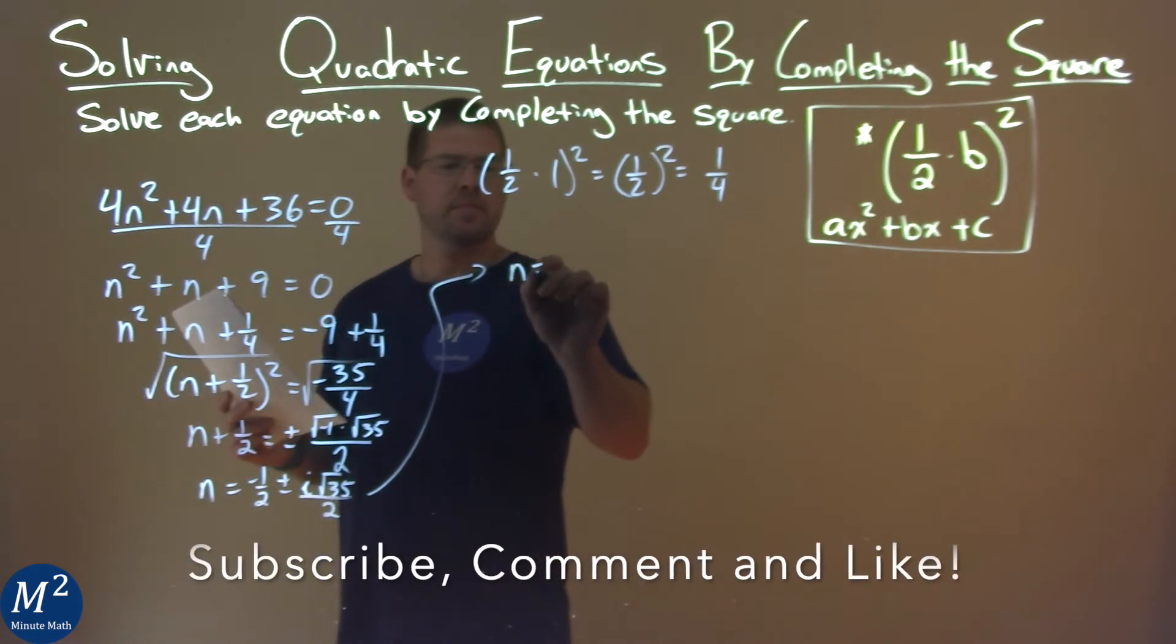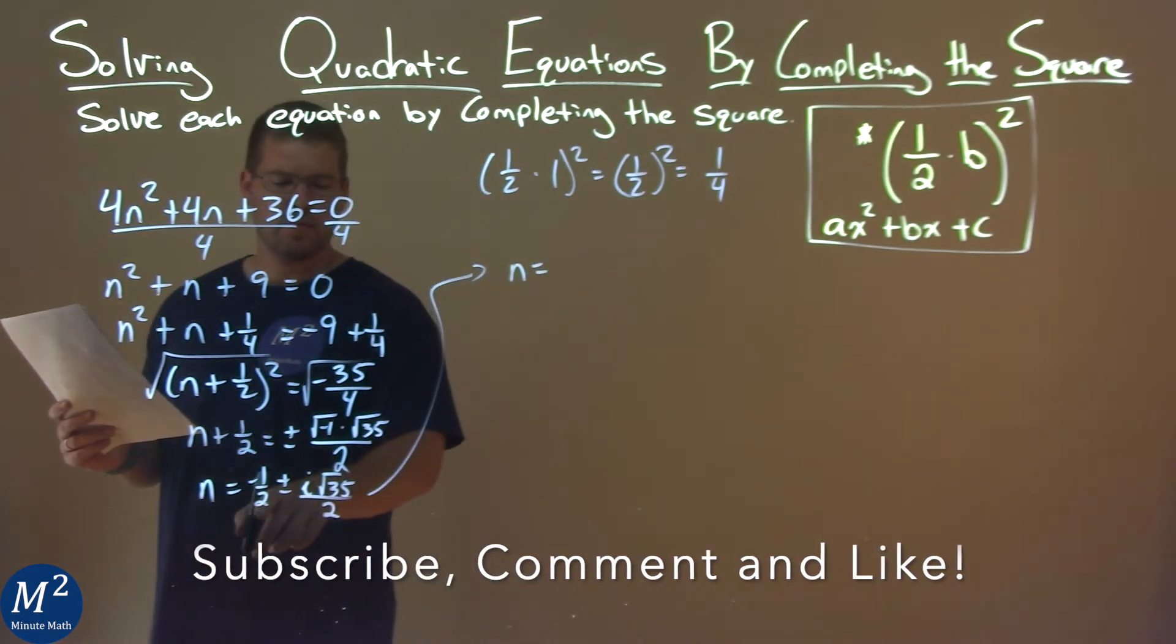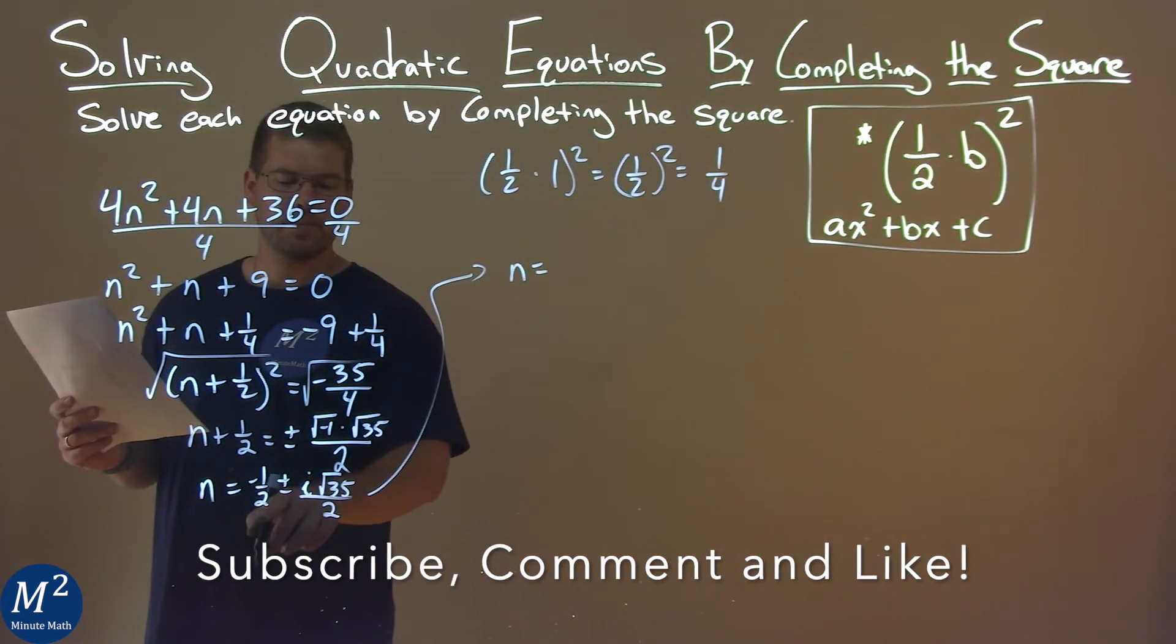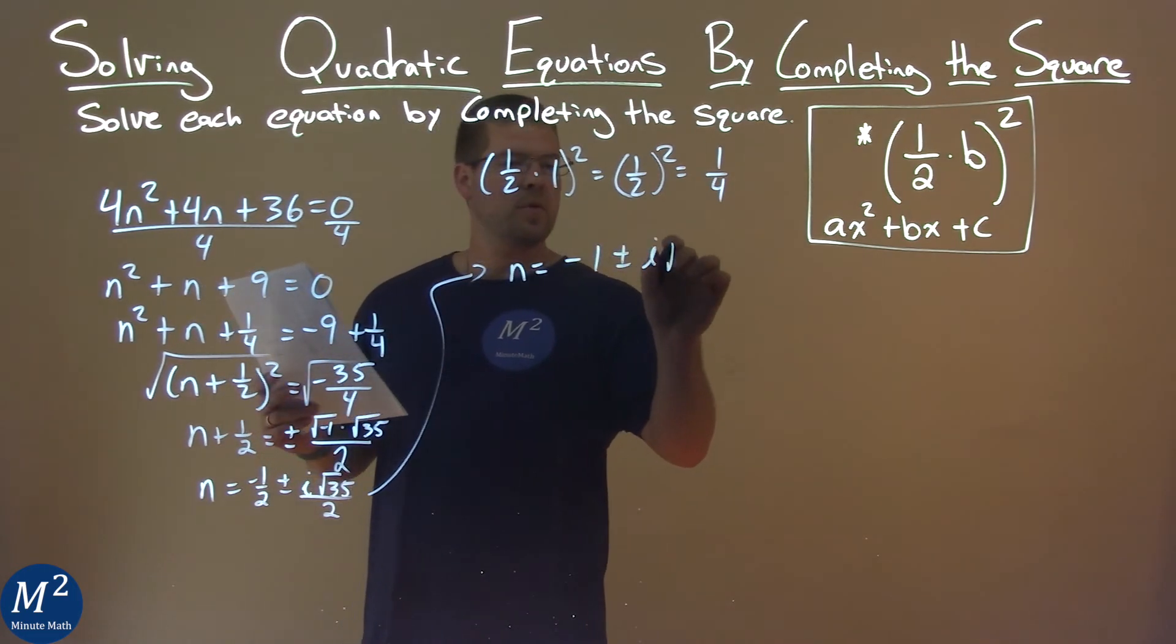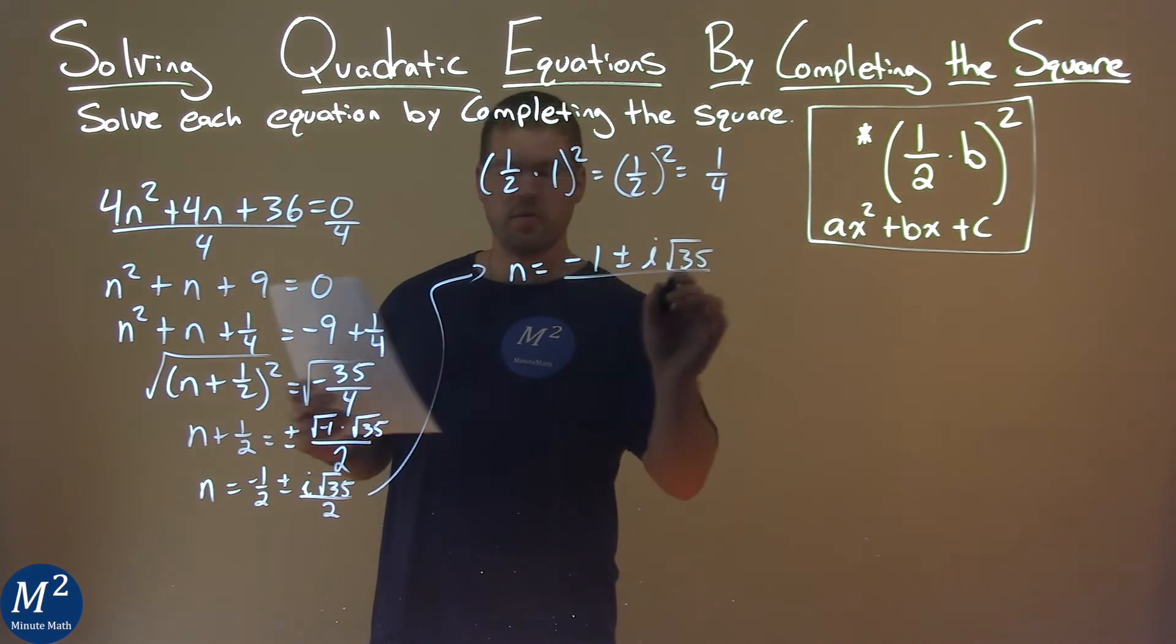Let's keep going here. And n equals, and notice we have the same denominator, common base of 2, so we can add them together. So we can write it as negative 1 plus or minus i square root of 35 over 2.